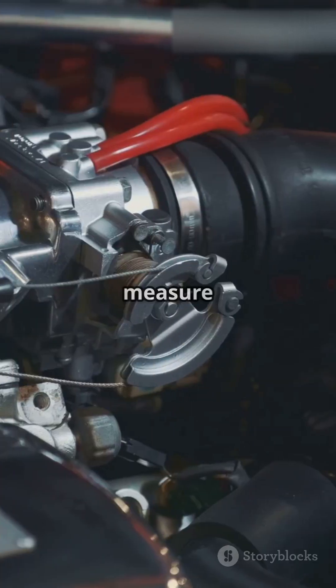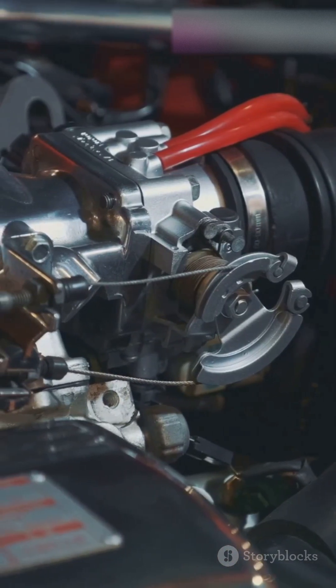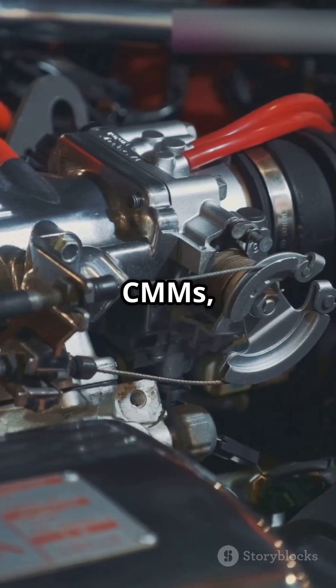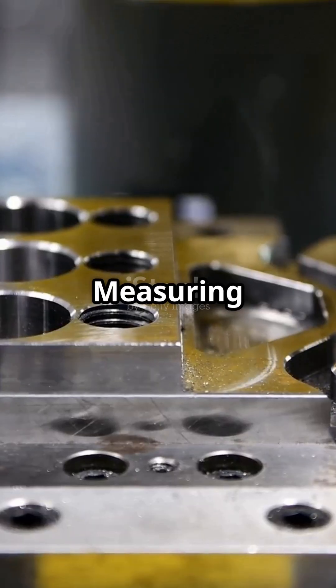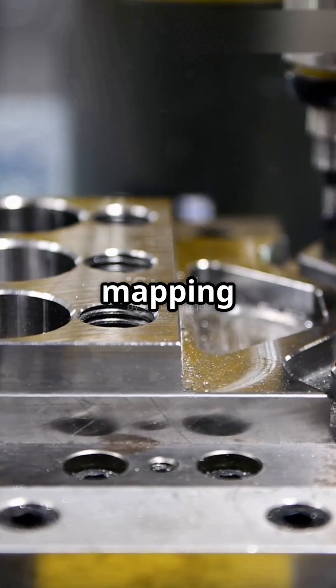But what if you need to measure something super complex like a car engine? That's where coordinate metrology steps in. It uses advanced machines like CMMs, which stand for coordinate measuring machines. Imagine a robot arm with a super precise touch, mapping out every nook and cranny of an object in 3D.